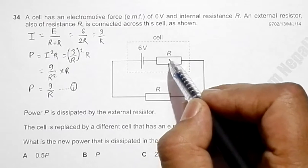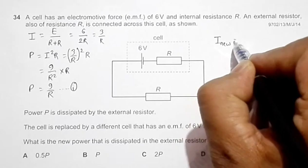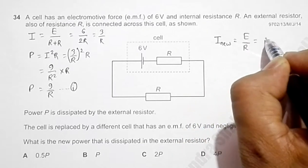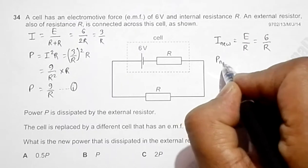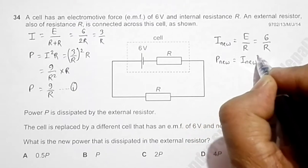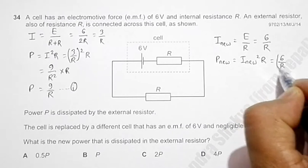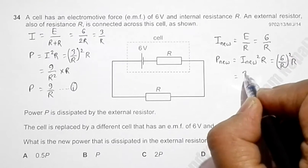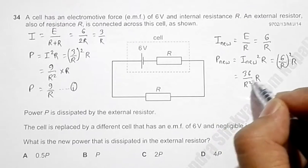So now the new current will be equal to I new, which equals E by just R, that's equal to 6 by R. The new power will now be equal to power new equals I new squared into this R, which will be equal to 6 by R squared into R. Equal to 36 by R squared into R. When you cancel this R and R, it will be 36 by R.